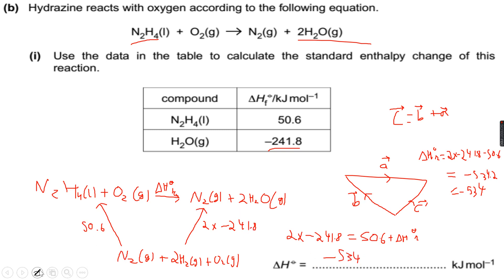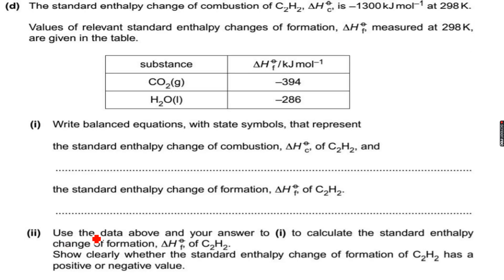Let's move forward. The standard enthalpy change of combustion of C₂H₂ is delta H naught C (C₂H₂) = minus 1300 kJ per mole at 298 K. The standard enthalpy changes of formation, delta H naught f, measured at 298 K, are given in the table.